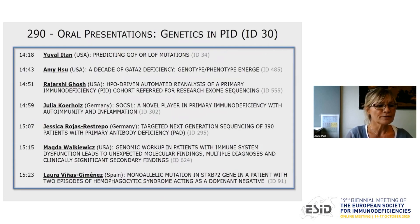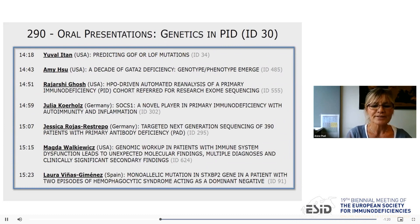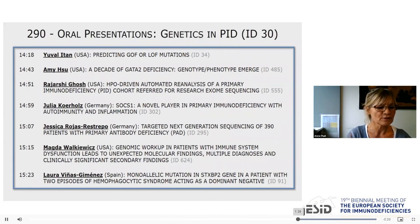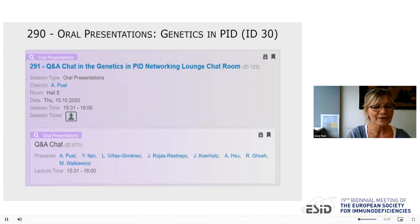The first speaker, Yuval Itan from US, will talk about predicting gain-of-function or loss-of-function mutations. Then Emi Su is going to talk about the transcription factor GATA2 with a decade of GATA2 deficiency. Khashar Shigos, also from US, will present about human phenotype ontology. If you have any questions or comments, please join us. I hope you will enjoy this session. Thank you.